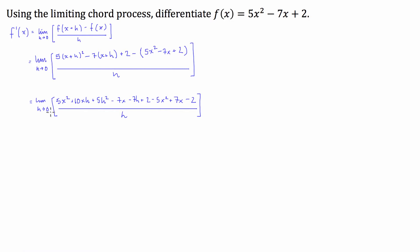Now what I'm going to do now is I'm going to combine my like terms. So I have 5x squared and negative 5x squared, so I'm just going to get rid of them. I have negative 7x and positive 7x, so they will also cancel each other out. I have positive 2 and negative 2, so they cancel each other out as well.